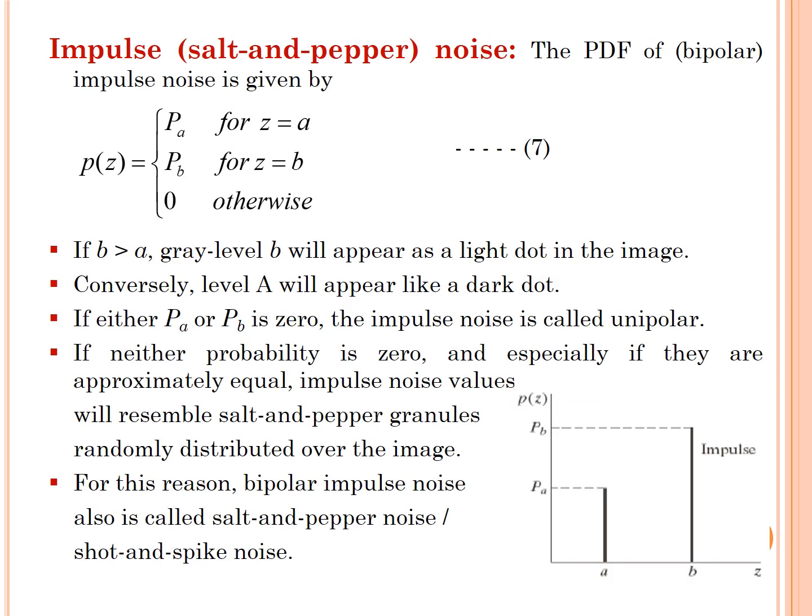Impulse noise or salt and pepper noise. The PDF of bipolar impulse noise is given by p(z) = Pa for z = a, it is equal to Pb for z = b, otherwise it is equal to 0. If b is greater than gray level, b will appear as a light dot in the image. Conversely, level a will appear like a dark dot. If either Pa or Pb is 0, the impulse noise is called unipolar. If neither probability is 0, and especially if they are approximately equal, impulse noise values will resemble salt and pepper granules randomly distributed over the image. For this reason, bipolar impulse noise also is called salt and pepper noise or shot and spike noise.